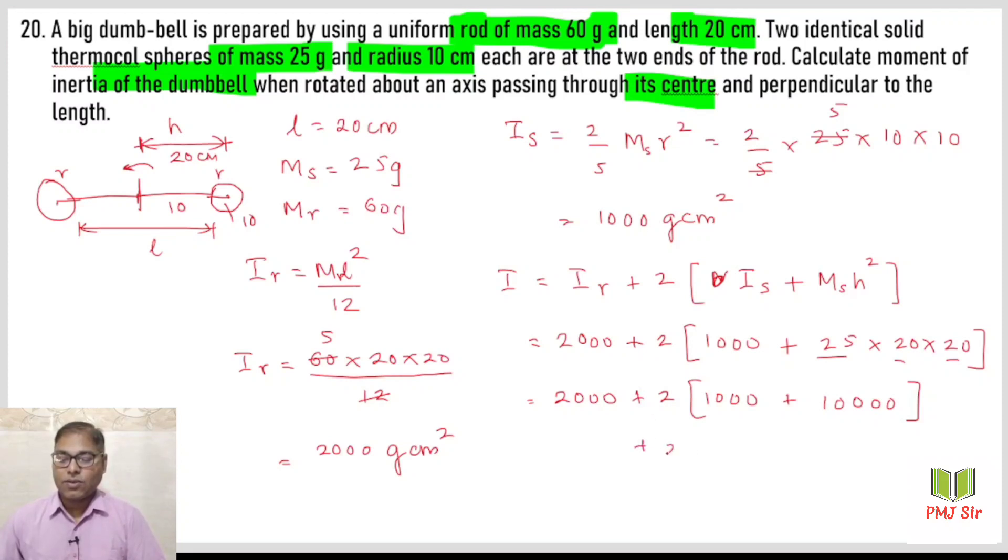Next step: 2000 plus 2 times 11000 equals 2000 plus 22000 equals 24000 gram centimeter square. So the total system moment of inertia is 24000 gram centimeter square.